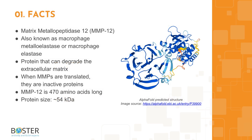Topic 1: Quick Facts About MMP12. Matrix metallopeptidase 12, or MMP12, belongs to a family of proteins that can degrade the extracellular matrix. When matrix metallopeptidases are first translated, they are inactive proteins. MMP12 is 470 amino acids long and runs about 54 kilodaltons on a western blot.